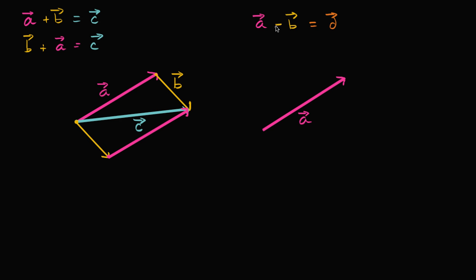And one way of thinking about subtracting vector B is instead of adding vector B the way we did here, we could add negative B. So negative B would have the same magnitude but just the opposite direction. So that's vector A. Vector negative B, we'll still start it right over here, but we'll go in the opposite direction. So let's do that. So negative B is gonna look something like this.